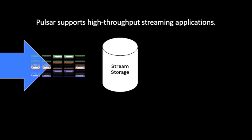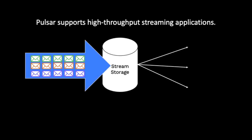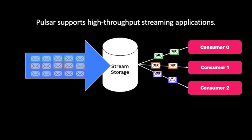In fact, Pulsar supports high-throughput streaming applications with large amounts of messages. Streaming is best for situations where the order of messages is important.